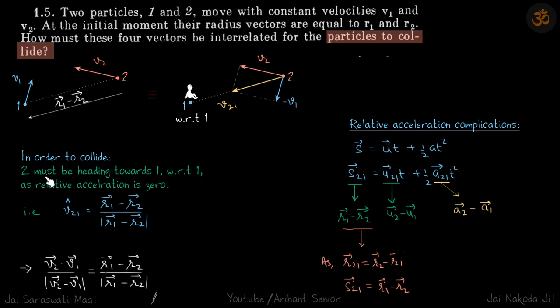In order to collide, particle 2 must be heading towards 1. With respect to 1, if we are sitting on 1, then 2 must appear to come towards 1. Only then will the collision happen.